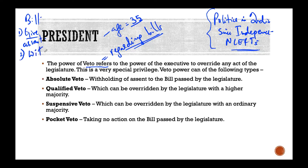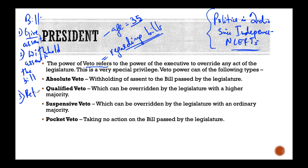Sometimes the President can withhold assent. Withholding assent means he does not want to approve this. The third option is that he or she can return the bill — essentially saying, 'I see the bill, I see that both houses have approved this, but please reconsider.' However, the Parliament will go through the bill again, and they may decide that they still want it the way they have framed it and accepted it.